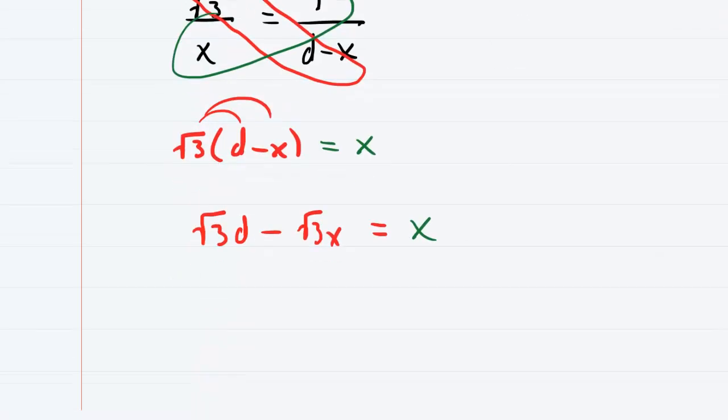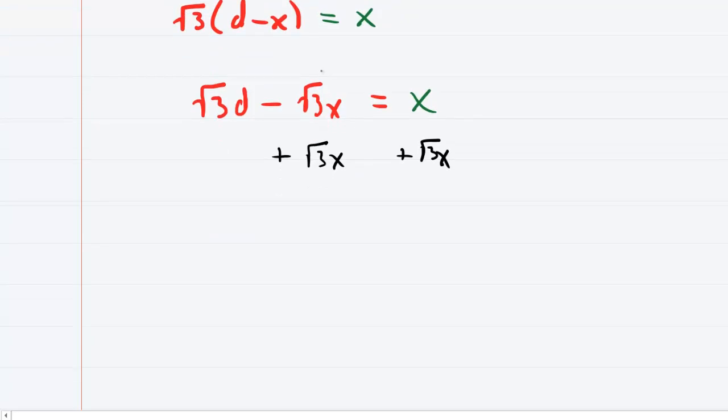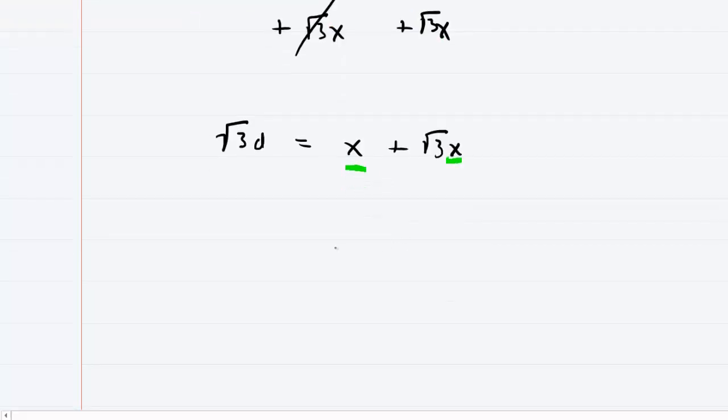Let's go ahead and add radical 3x to both sides. So it will cancel out on the left-hand side. Now we have radical 3d equals x plus radical 3x. Notice we have a common factor of x. So we're going to factor out the x. So we'll have x times 1 plus radical 3.